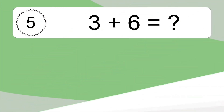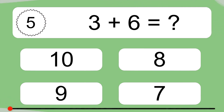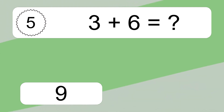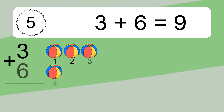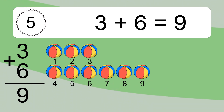3 plus 6 equals what? 3 plus 6 equals 9. Let's count it: 1, 2, 3, 4, 5, 6, 7, 8, 9.